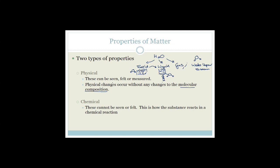Chemical changes cannot be seen or felt. This is how a substance reacts in a chemical reaction. So when we take our water molecule and send an electric current through it and we end up with oxygen and some hydrogen gas, that is a chemical reaction. When the water molecule actually breaks up entirely, that's a chemical reaction.